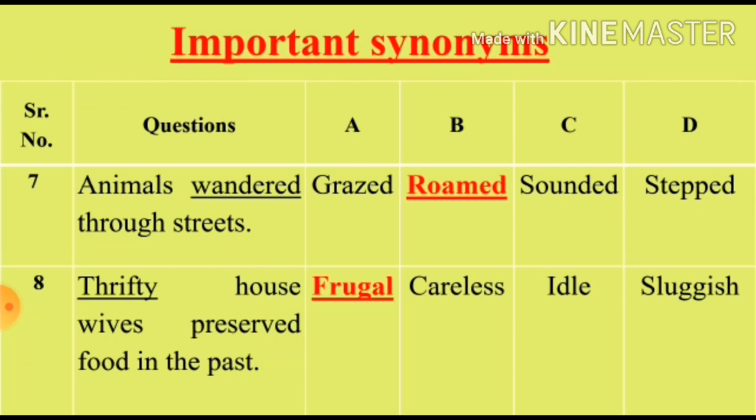Question 7: 'Animals wandered through streets.' We will see the synonym for the word 'wandered'. Option A: Grazed (charna). Option B: Roamed (awara goomna). Option C: Sounded (lag raha tha). Option D: Stepped (dakhil hona). Options C and D are irrelevant. Option B, Roamed, is the right answer for Question 7.